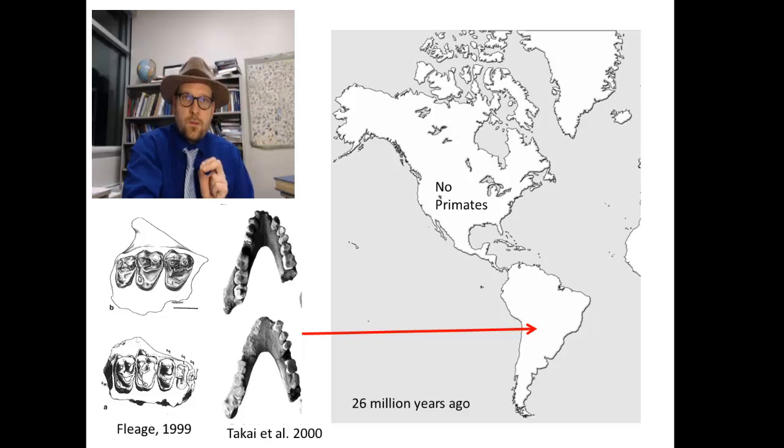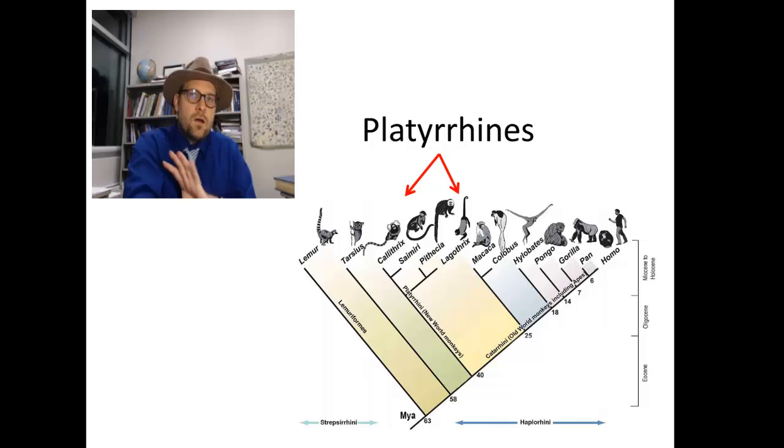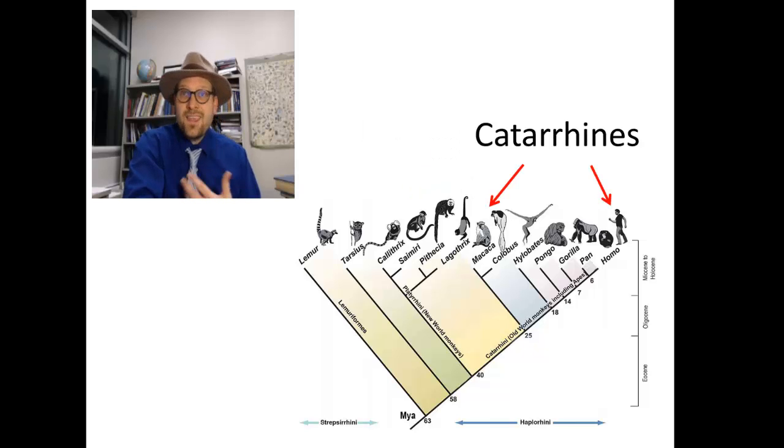Two of the earliest South American monkeys are known, Bransiella and Xelativius. These two small monkeys are placed within all other living South American monkeys, the Platyrines, which form a sister group to African monkeys, the Catyrines.